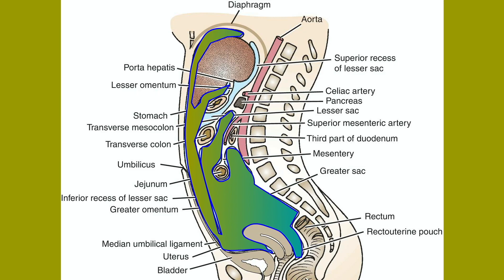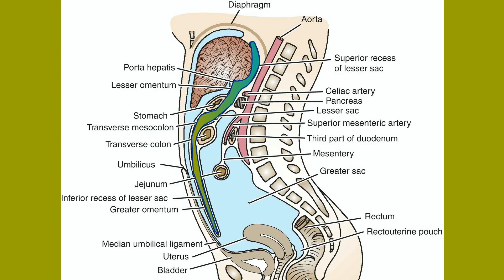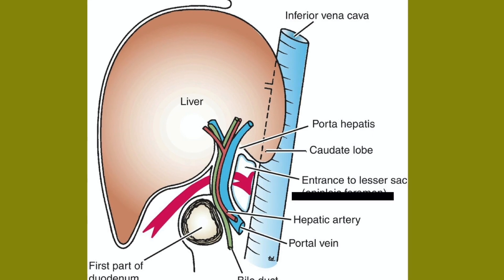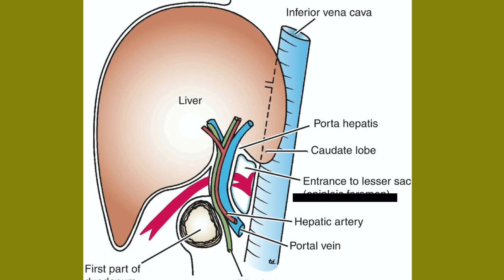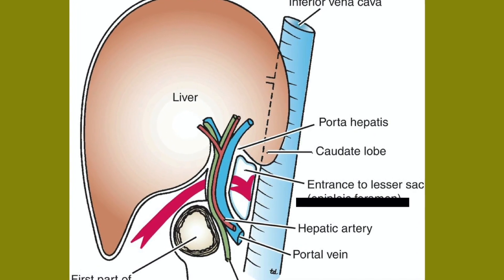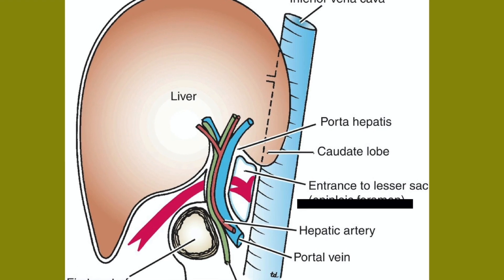The greater sac is the main compartment and it extends from the diaphragm down into the pelvis. The lesser sac is smaller and is behind the stomach. The greater and lesser sacs are in communication with each other through the epiploic foramen, or oval window.